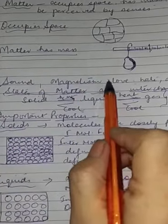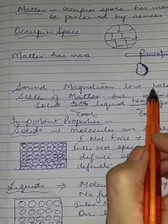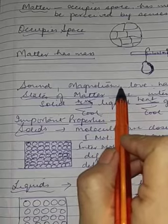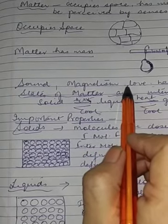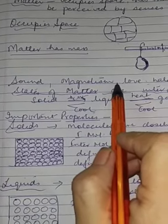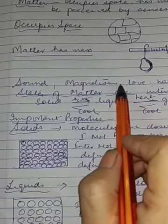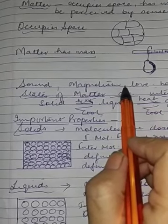Sound, magnetism, love, hate. These emotions are not considered as matter. Why? Because neither they occupy space nor they have mass.